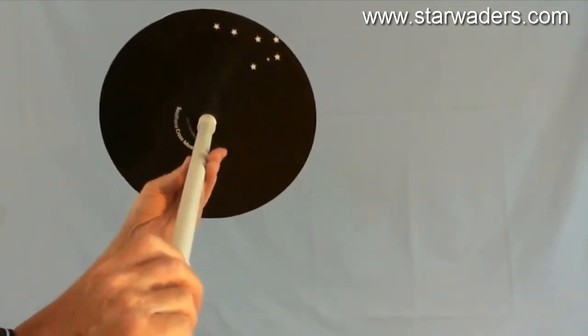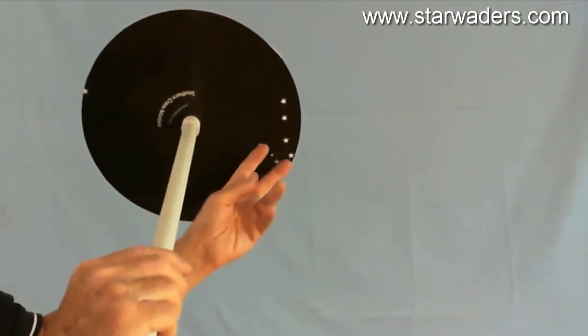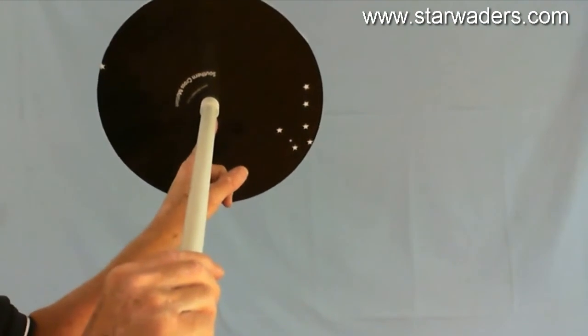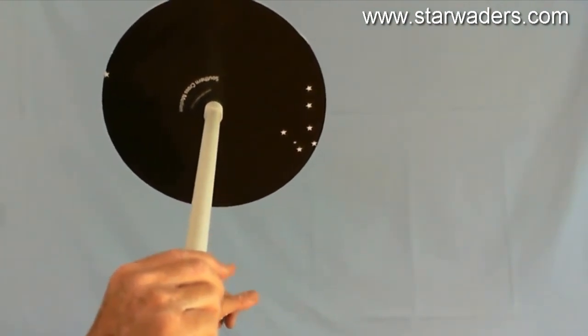In fact, it doesn't matter in which position the Southern Cross is. The four and a half times extension of the long arm—one, two, three, four and a half—always brings us to the same point in the sky. From that point, we can just drop straight down.